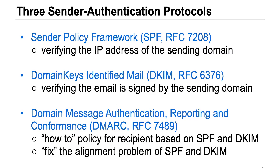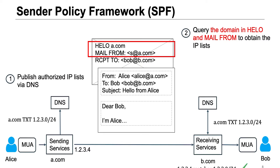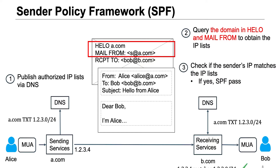To address this problem, three sender authentication protocols — SPF, DKIM, and DMARC — were developed. SPF uses IP address to authenticate the sender. It works in three steps. First, the sending service publishes an authorized IP list in a DNS record. Then the receiving service queries the domain in HELO and MAIL FROM to obtain the IP list. Then it checks if the sender's IP matches the IP list. If yes, SPF passes. So SPF ensures that only authorized IPs can send email for a given domain.